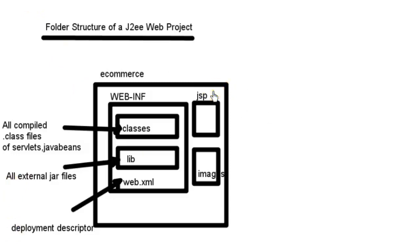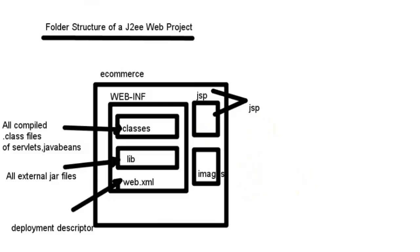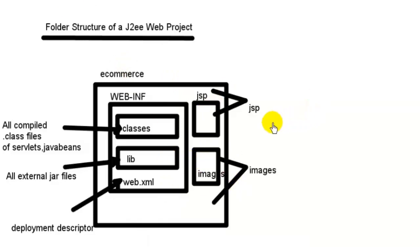The JSP folder is optional — you may put your JSP files directly within the JSP folder or directly within the e-commerce folder. Similarly, images, movie files, clips, and other static files can go directly within the e-commerce folder or inside the images folder you created.